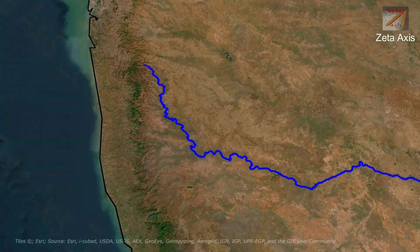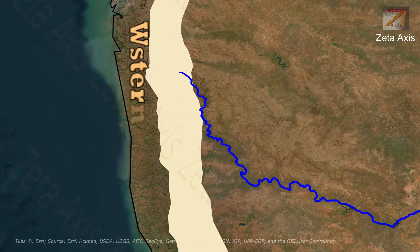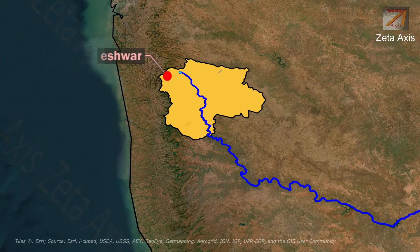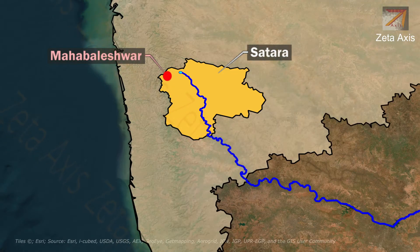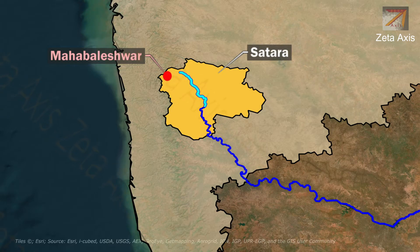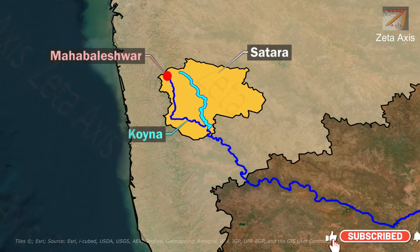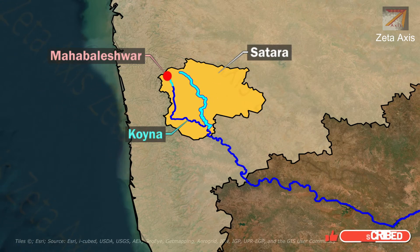The Krishna River originates in the Western Ghats near Mahabaleswar in Satara district of Maharashtra. After the origin, it flows through Satara district where it meets the Koina River.